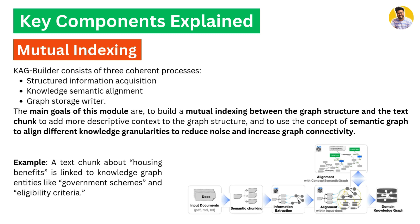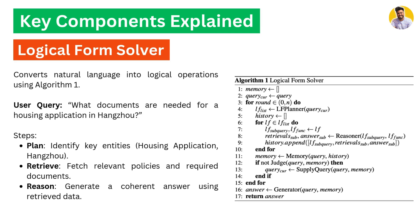For example, a chunk about housing benefits is already linked to the knowledge graph, and entities like government schemes and eligibility criteria are associated because these terms are very similar to those concepts. That's how mutual chunking works between the graph structure and your chunked text.